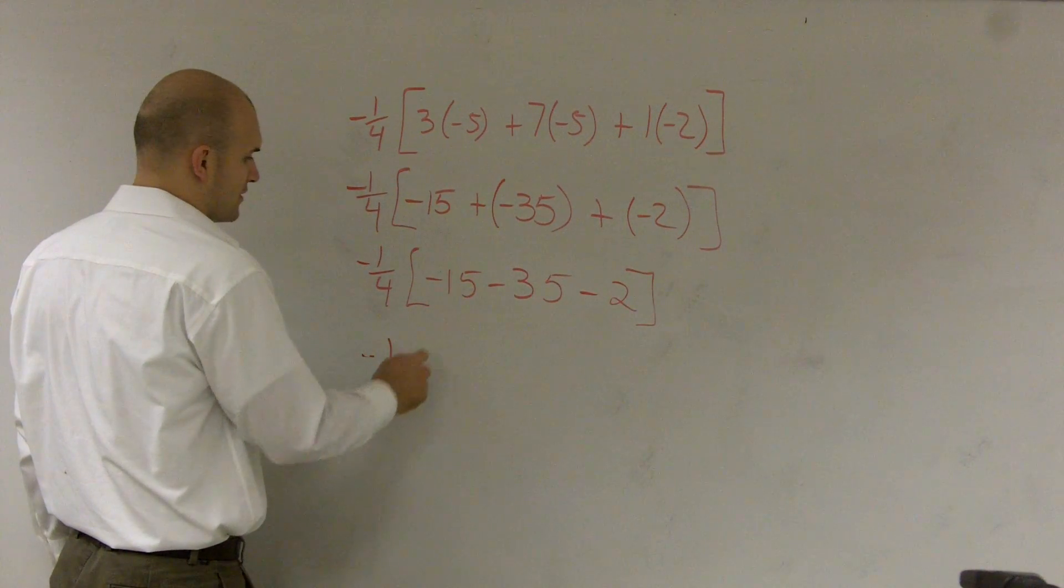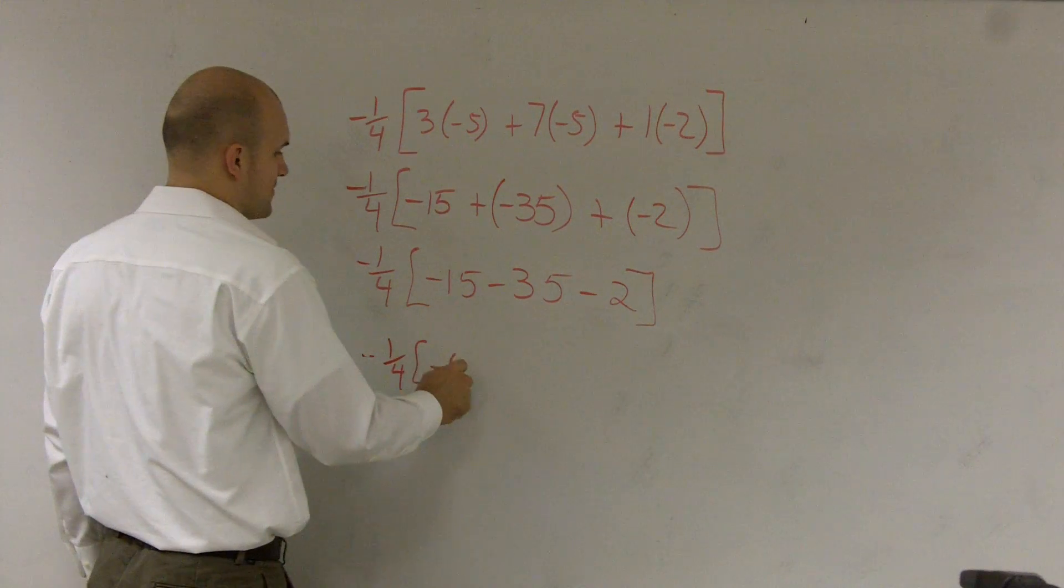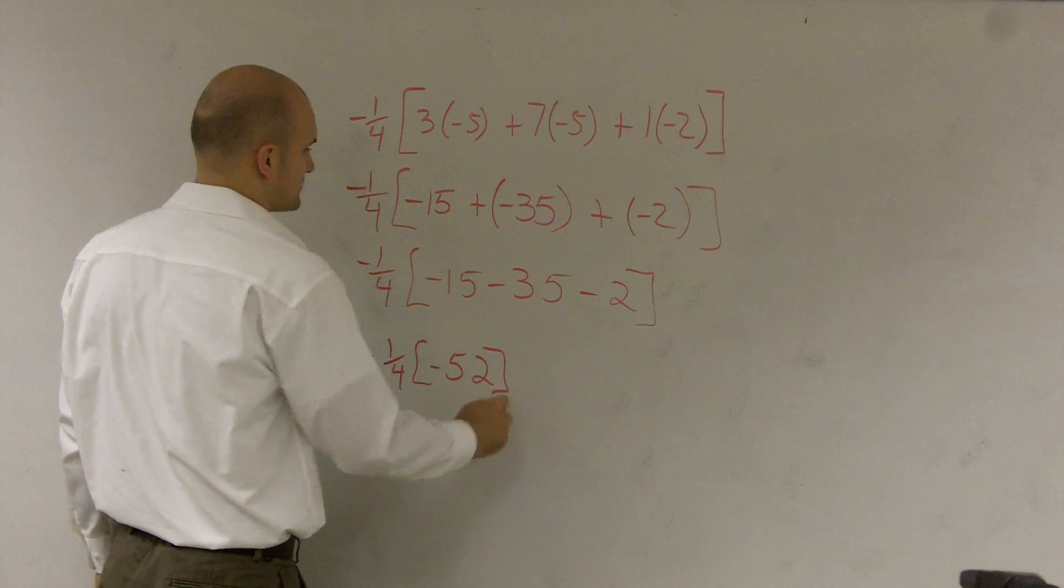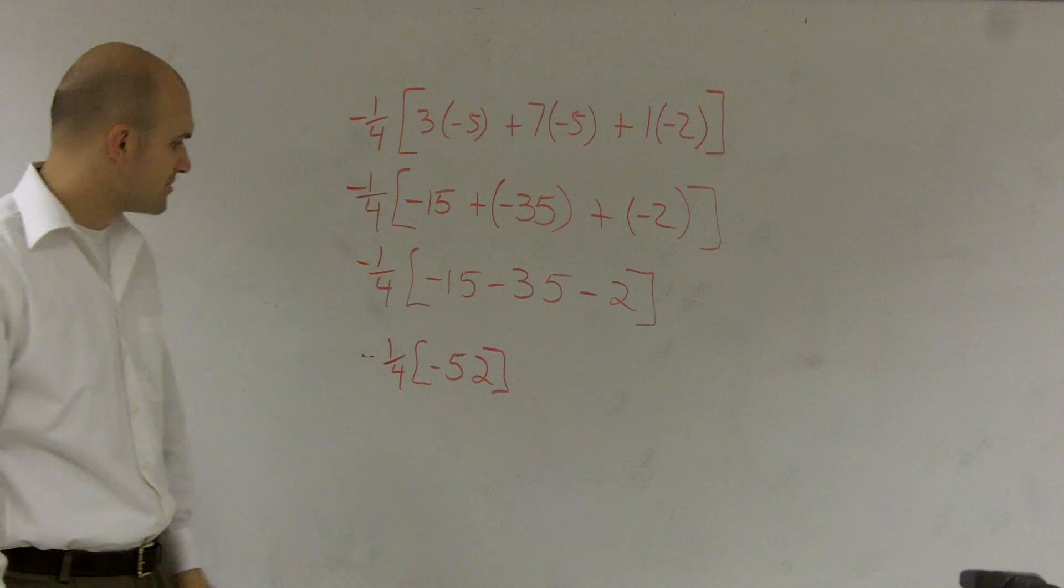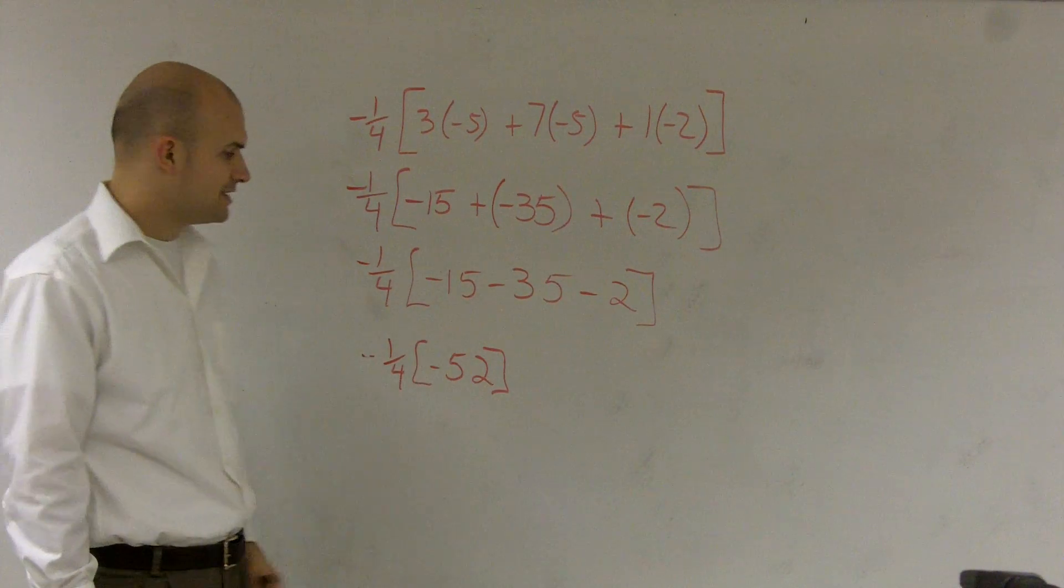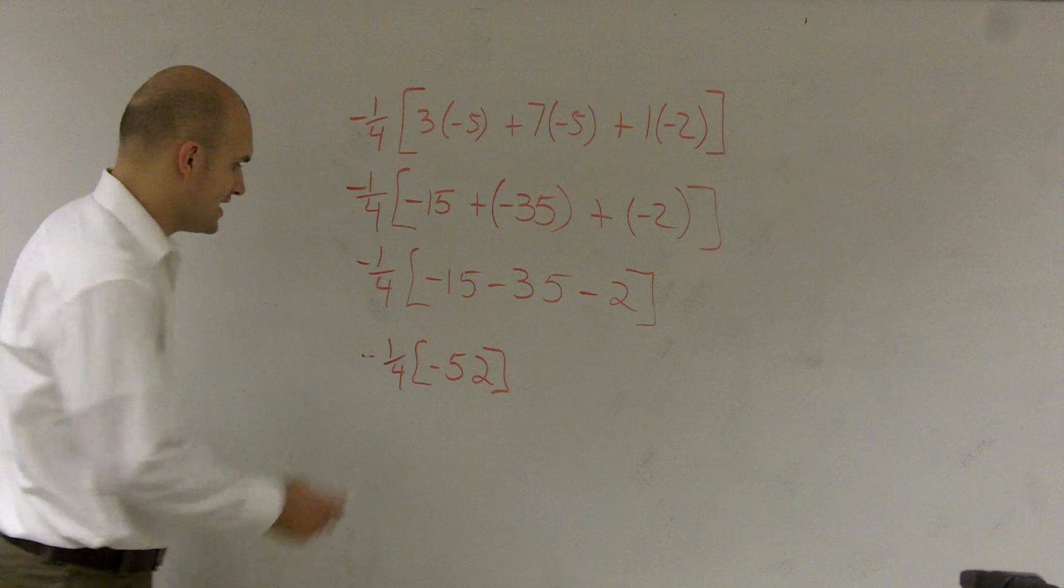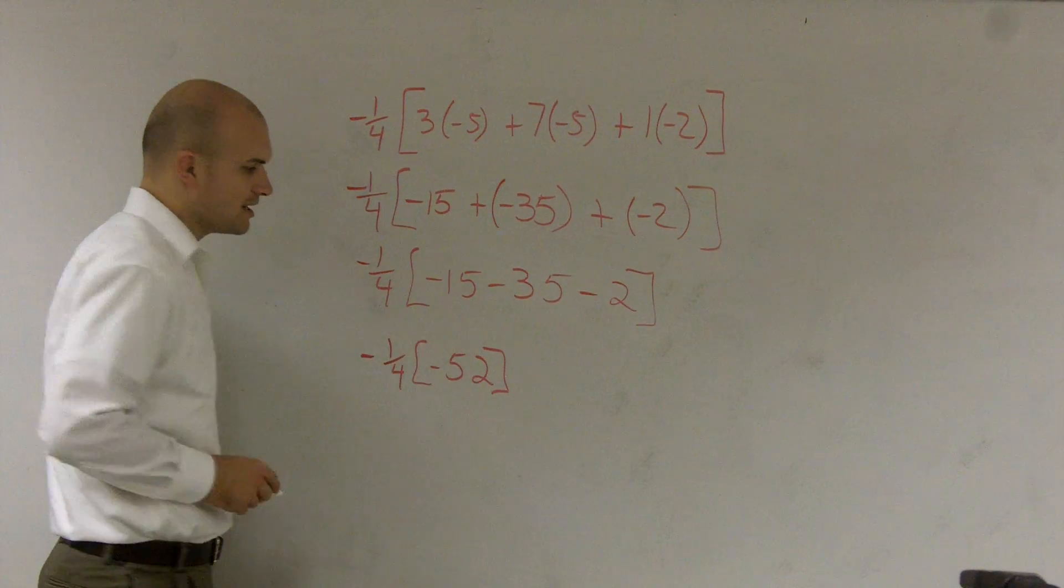If I wrote it like this, it's the same thing. You just keep subtracting from -15. So now, -1/4 times -52.